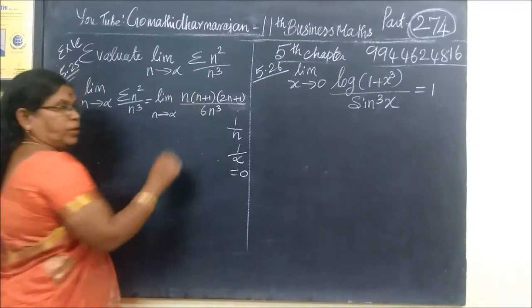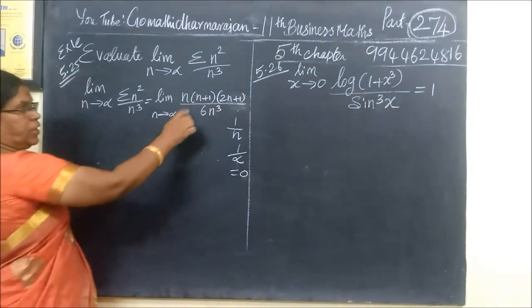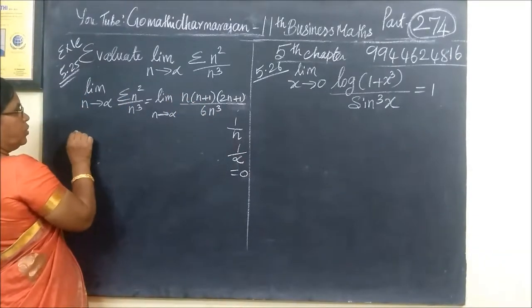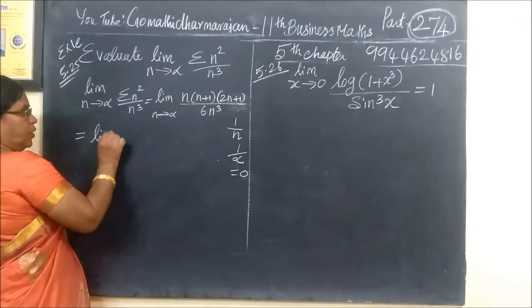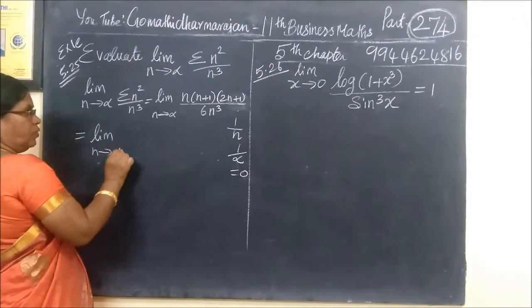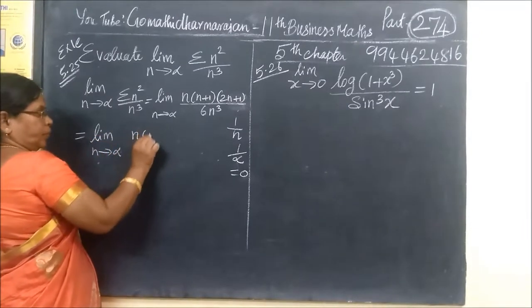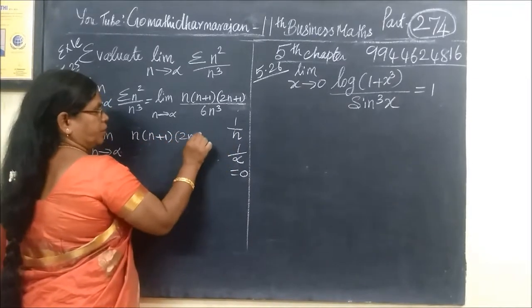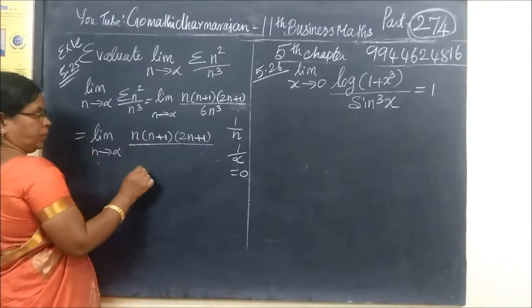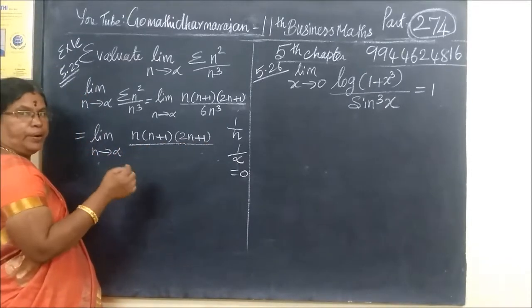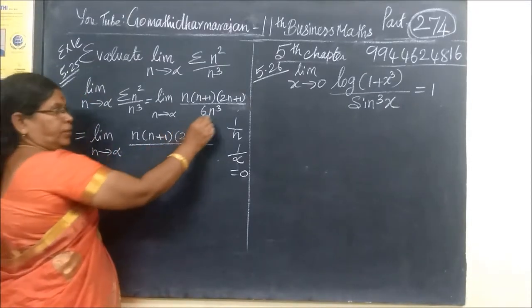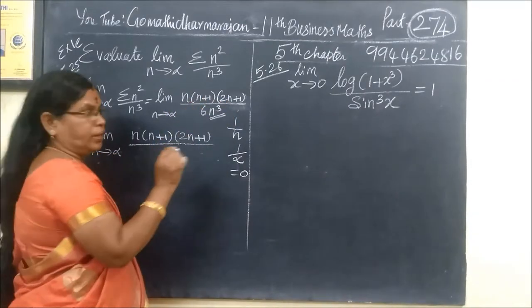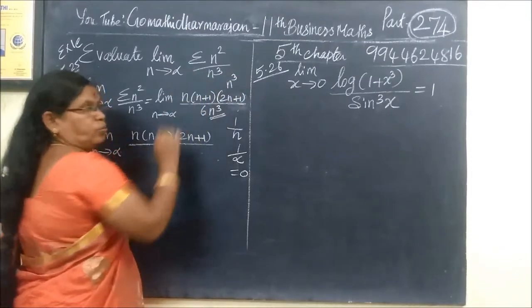That is why we need n cubed in the denominator. We multiply and divide by n. This will be equal to n cubed over n cubed form. So we have to divide this into two segments.